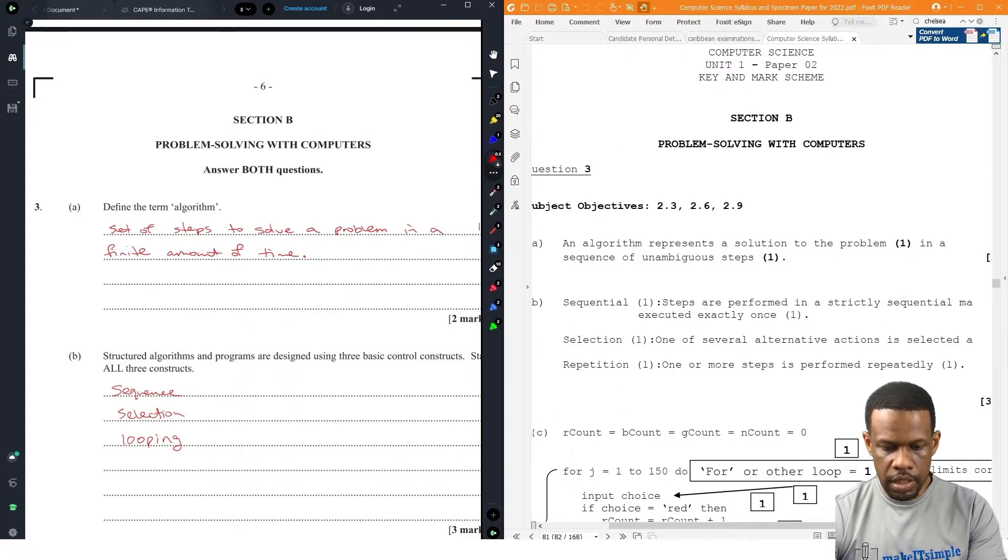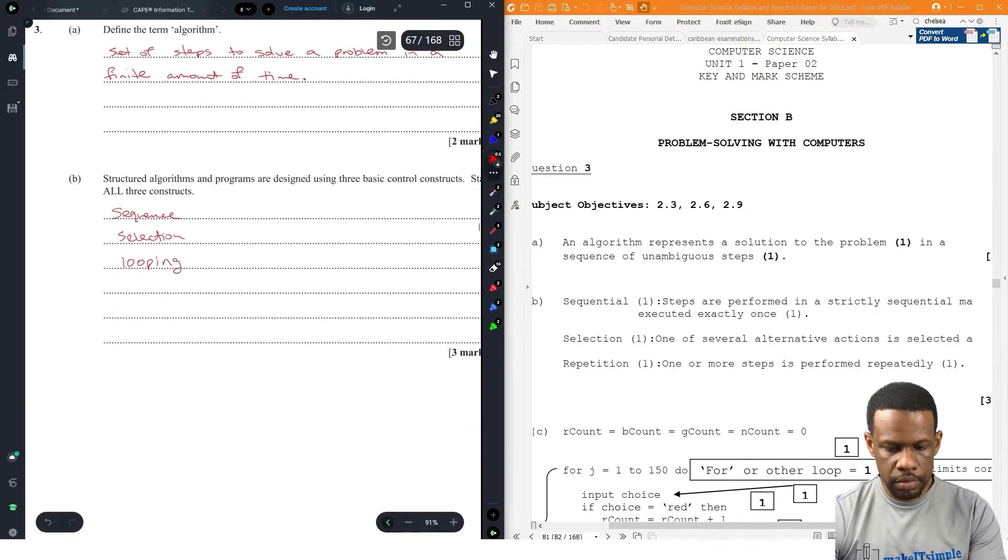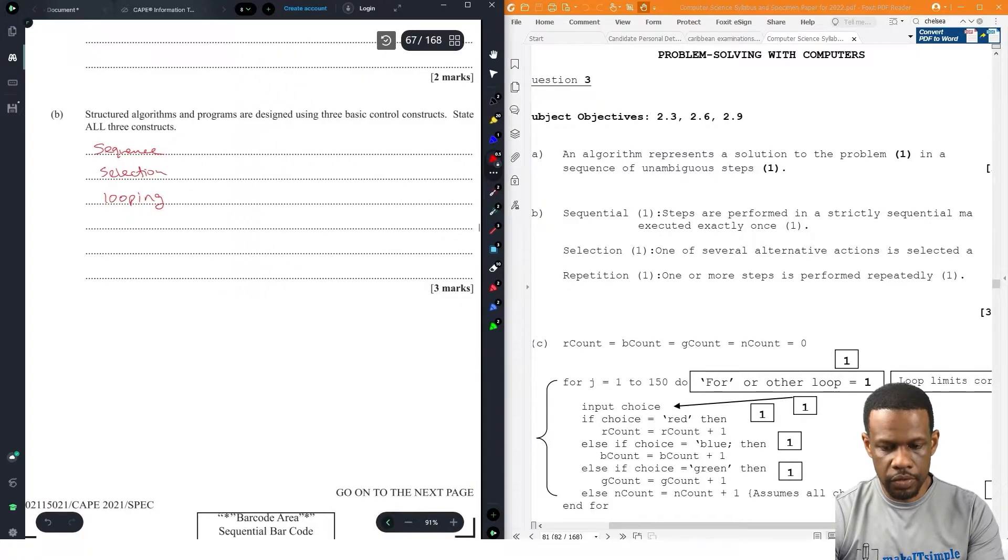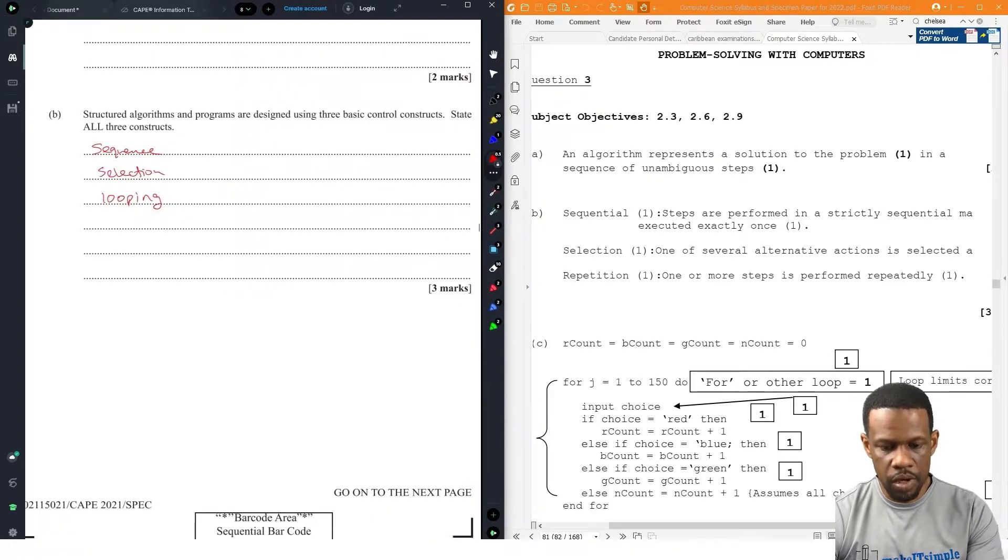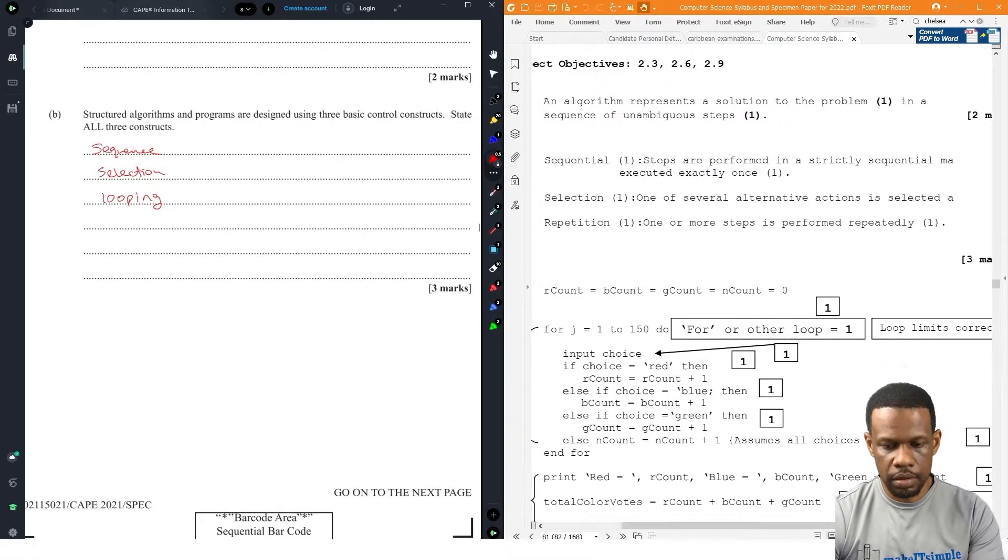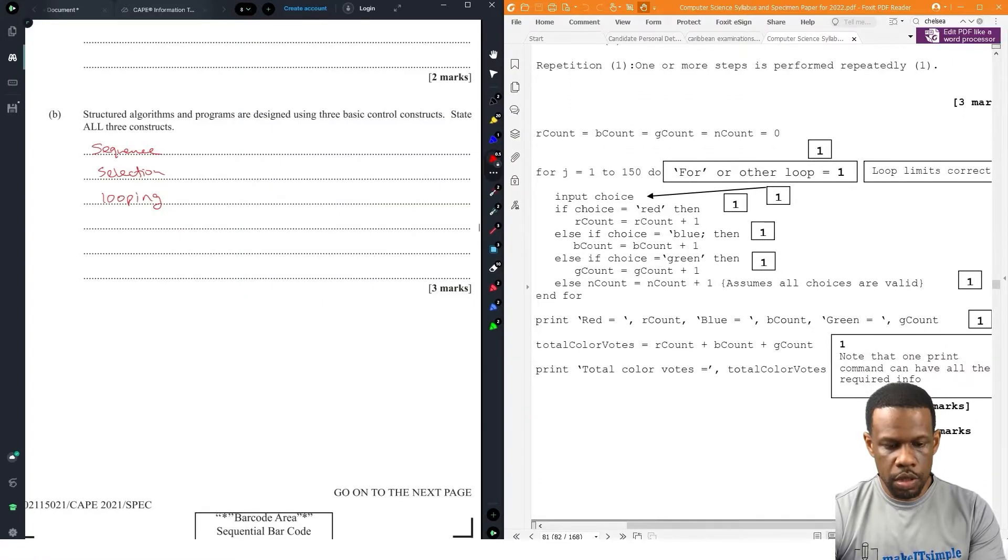Sequential, selection, repetition. Okay. So sequential selection repetition. Three marks. Cool. They have explanations for it. I guess if you explain it, they will still give you the mark. Because they have one for each one of them and it's only three marks. So yeah.